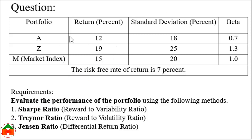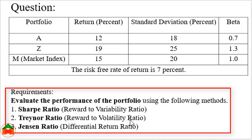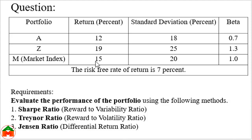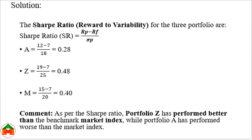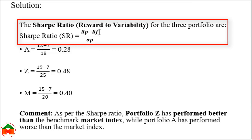From this question we have to find the performance of the portfolio using the Sharpe ratio (reward-to-variability ratio), the Treynor ratio (reward-to-volatility ratio), and the Jensen ratio (differential return). For the Sharpe ratio, the formula is (Rp minus Rf) divided by sigma p, where Rp means actual return, Rf means risk-free rate, and sigma p means standard deviation representing total risk.